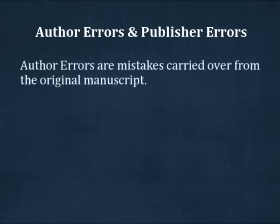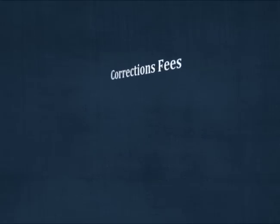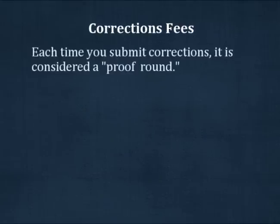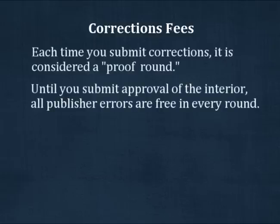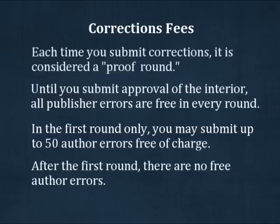Author errors are errors carried over from the original manuscript. They are most often typographical or grammatical mistakes, but can also include misuse of the spacebar, tab, or enter keys. Each time you submit corrections, it is called a proof round. Publisher errors are free in every proof round, but author errors are not. In your first proof round, you may submit up to 50 author errors at no additional charge. After the first proof round, there are no free author corrections.